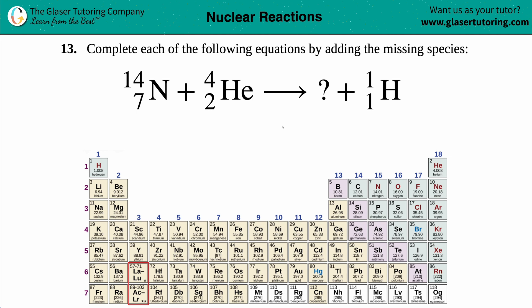Number 13, complete each of the following equations by adding the missing species. So we have nitrogen with an atomic mass of 14 and an atomic number of 7 coming together, plus an alpha particle, which is just helium, 4 on the top, 2 on the bottom, and that's going to morph into a hydrogen here, 1 on the top, 1 on the bottom, that's a proton, plus the missing piece that we have to find out.